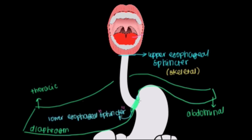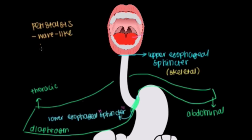The other thing about the esophagus, which is pretty interesting, is that it works primarily as a passageway for food — it doesn't do much. The only process it can claim any stake in is what's referred to as peristalsis. This is going to be an important term for the rest of the GI tract discussion. Peristalsis is just the wave-like propulsion of food.